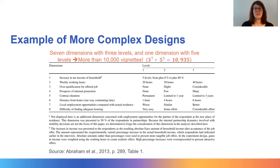Researchers typically rely on samples of vignettes from the universe and respondents are only shown a subset of these vignettes. However, sampling vignettes from the universe is always accompanied with a loss of orthogonality and level balance. Some dimensions or their interactions might be correlated in the vignette sample, which means that the effects of these dimensions are estimated with less precision.